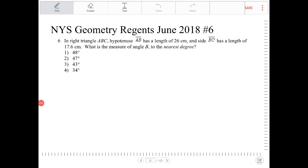In right triangle ABC, hypotenuse AB has a length of 26 centimeters. Let's draw this. The hypotenuse is AB, so that means we're going like this. It's going to be A, B, and C.